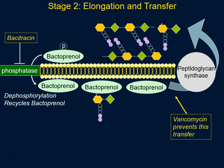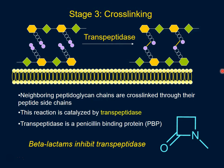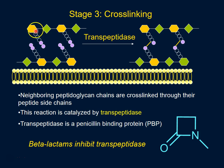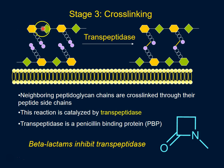Stage three is where we have cross-linking of these polymers. In stage two, we basically have glycans being put together in polymeric forms, and remember the NAM sugars have this pentapeptide hanging on to them — but there's no attachment between one strand of the sugar and the other strand.